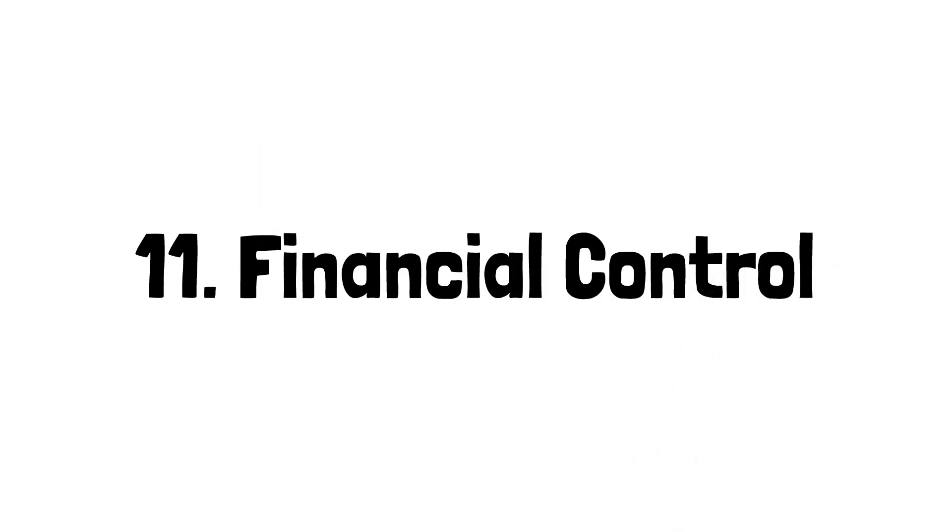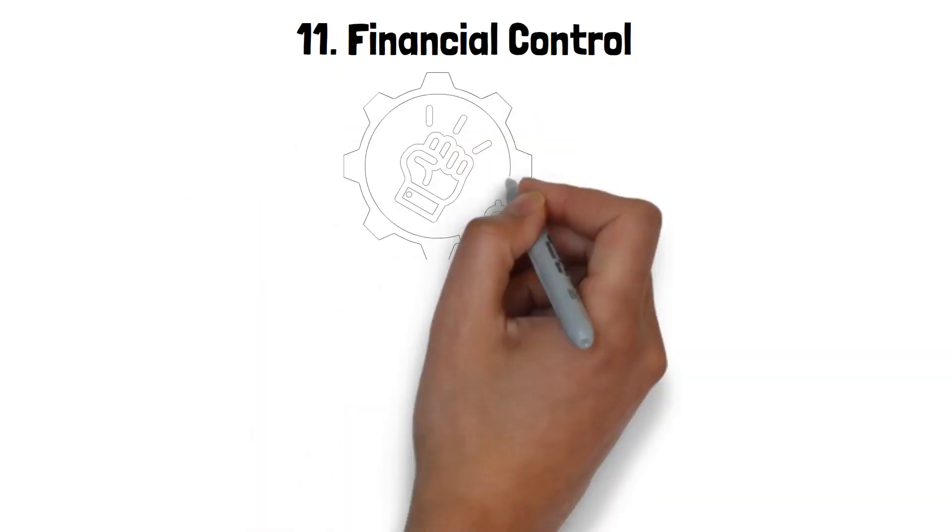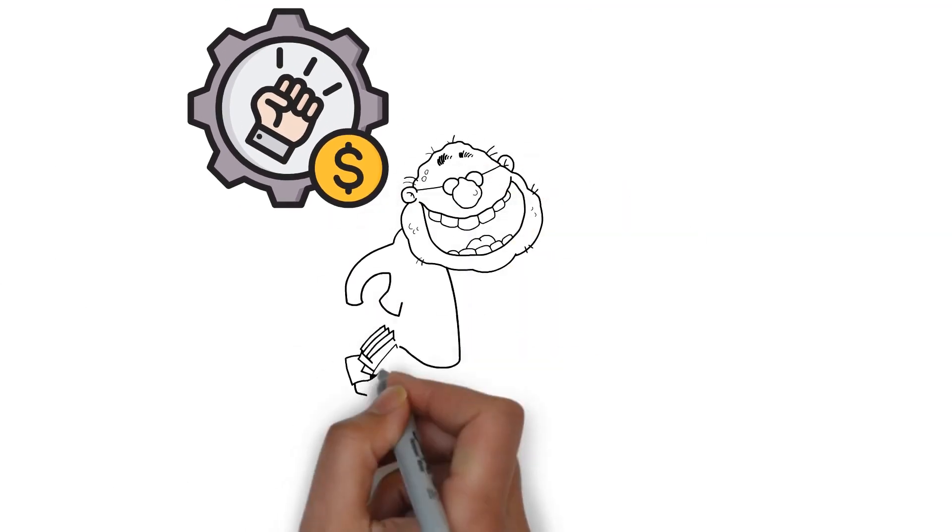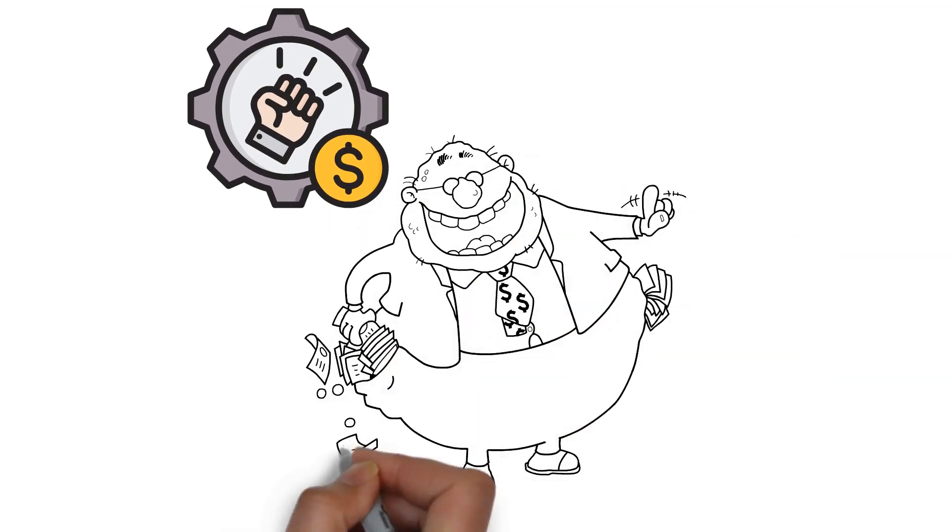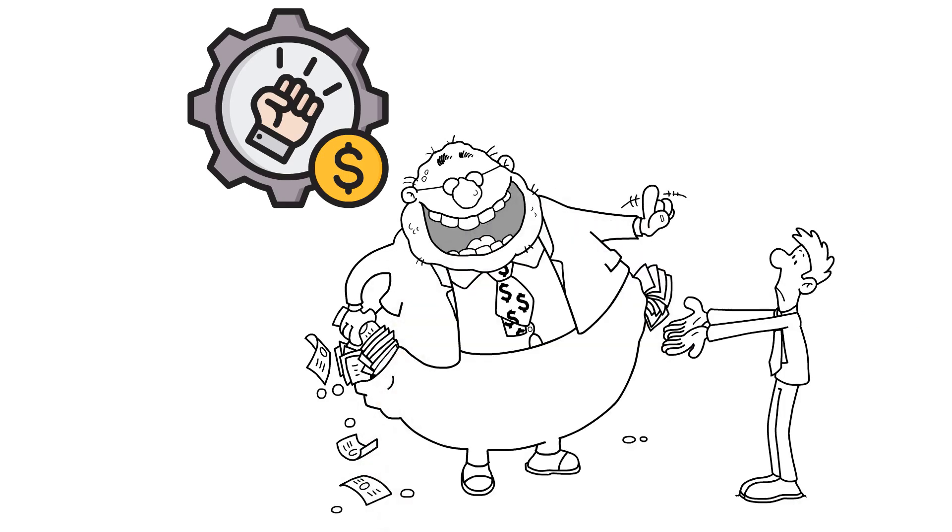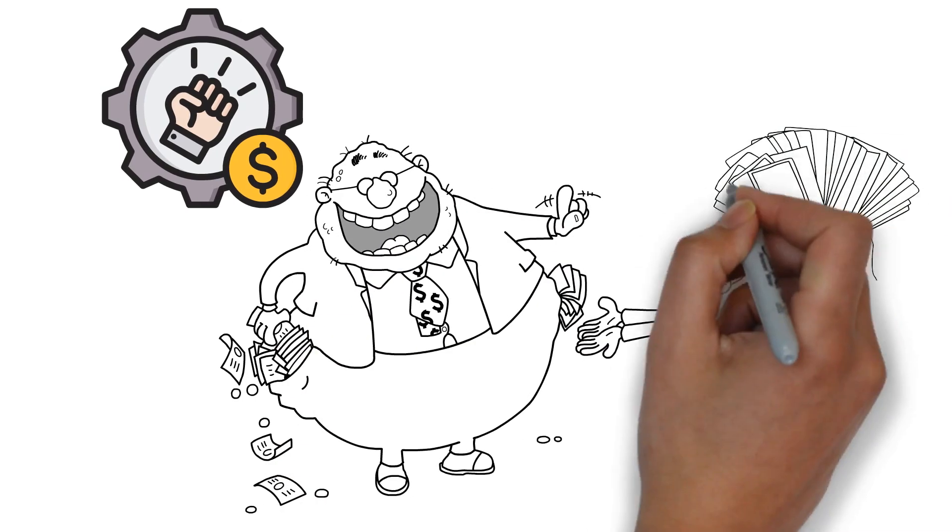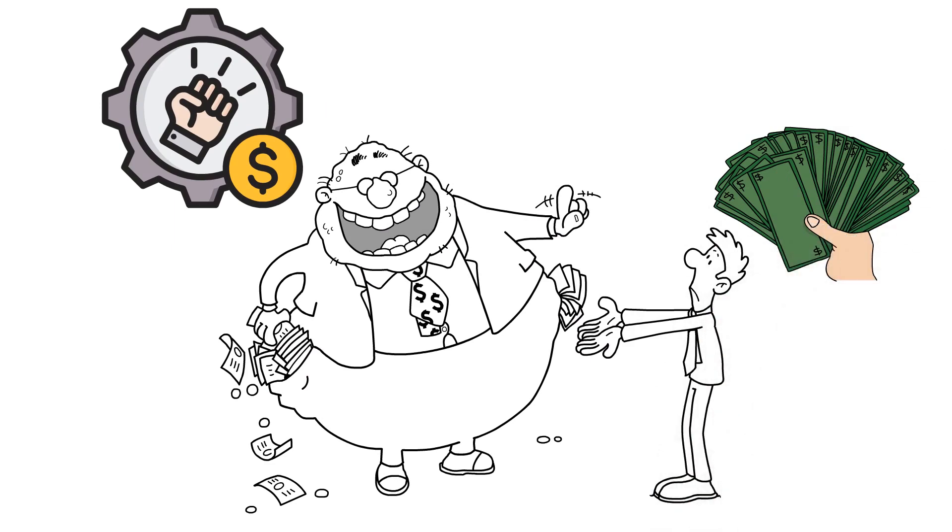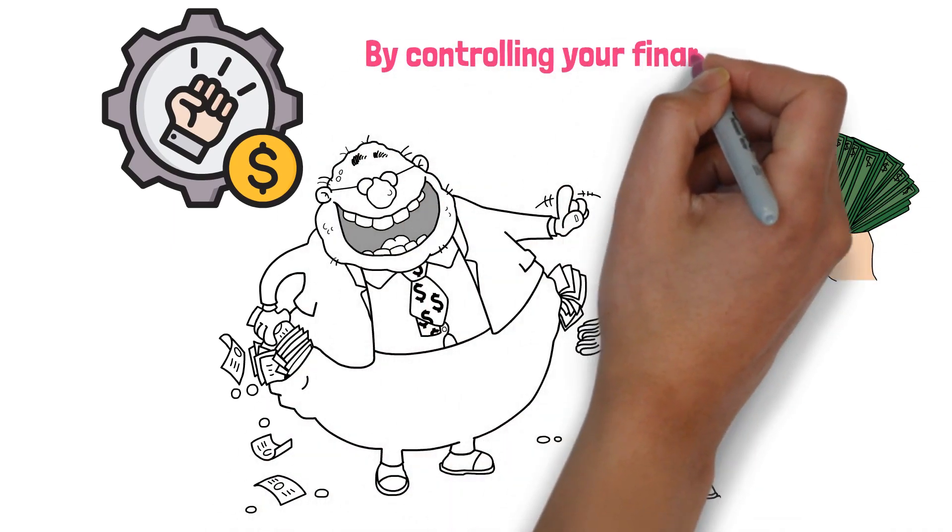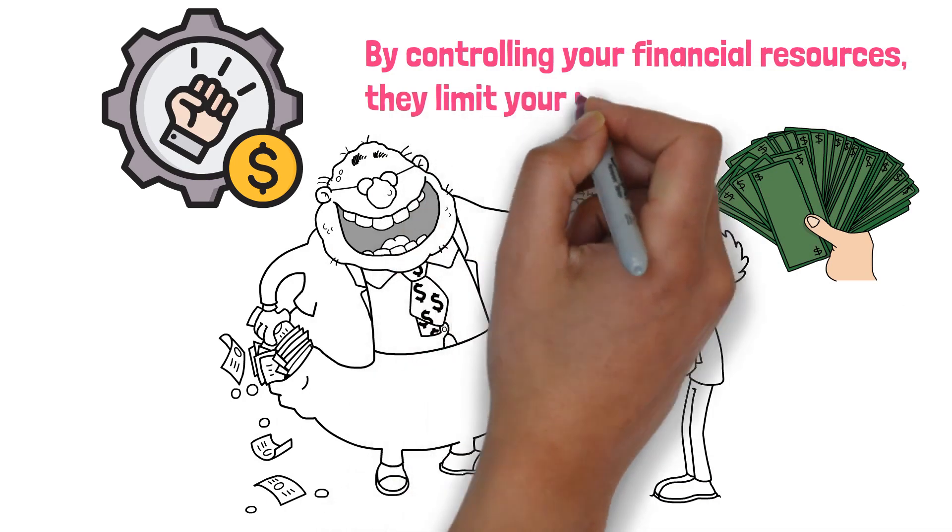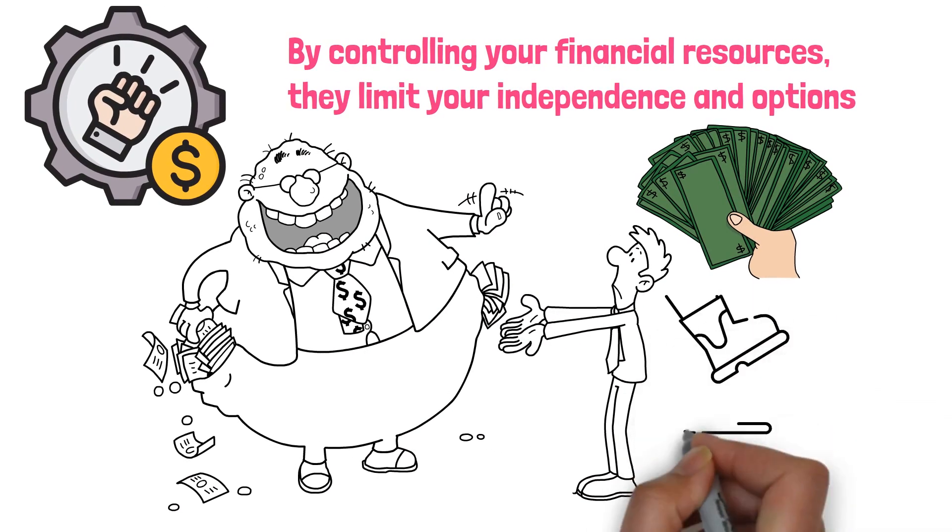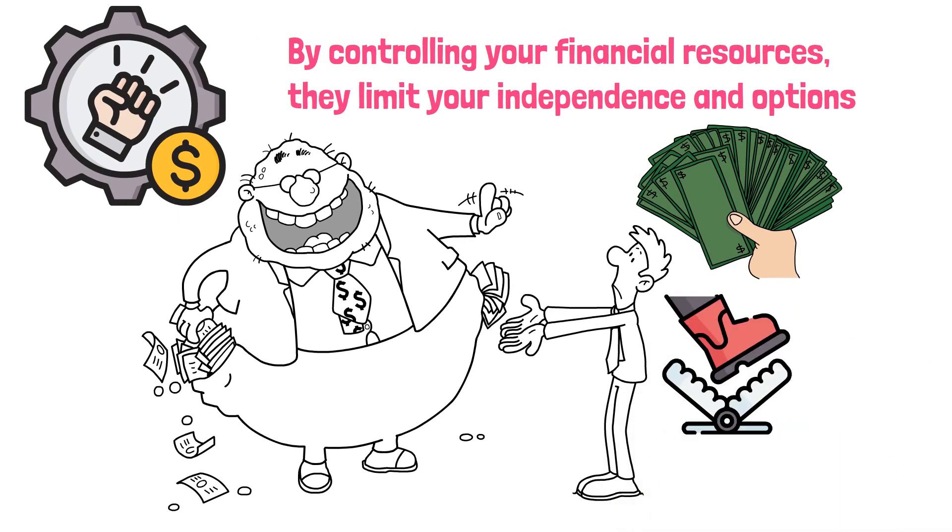11. Financial control. You've heard it before. Money is power. A subtle sign of manipulation is when someone wants undue control over your finances. They might criticize your spending, insist on managing joint finances, or even make you feel guilty for how you use your money. By controlling your financial resources, they limit your independence and options. It's a tactic that can trap people in relationships because they lack the means to leave.